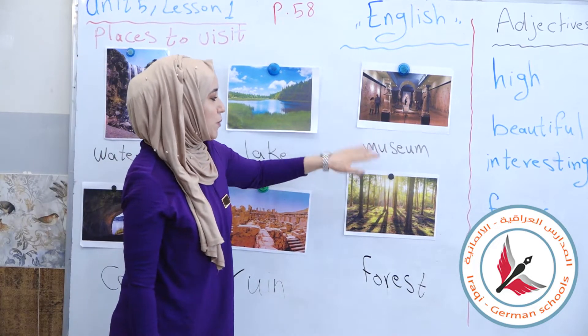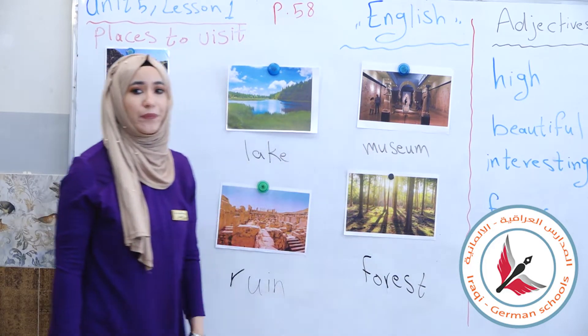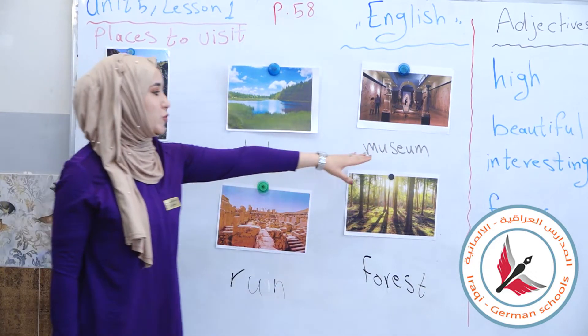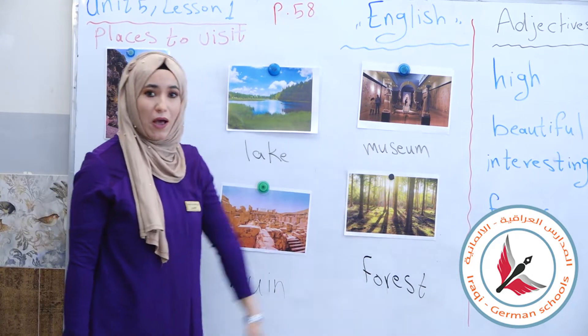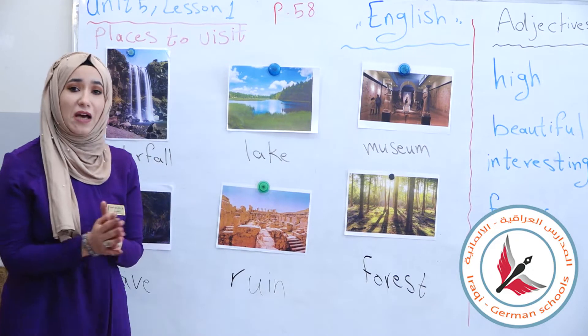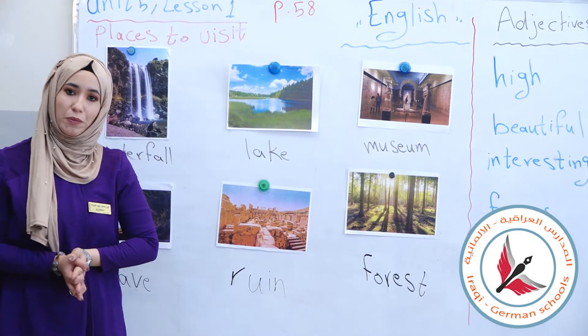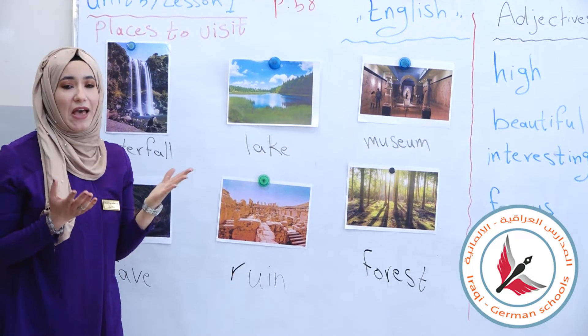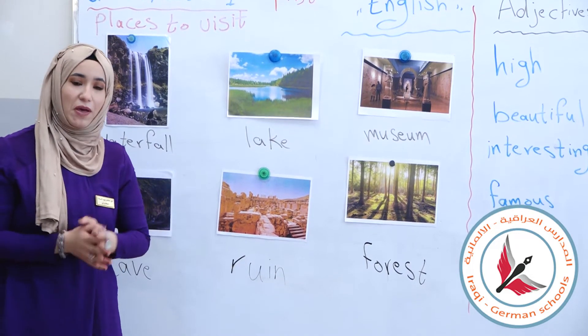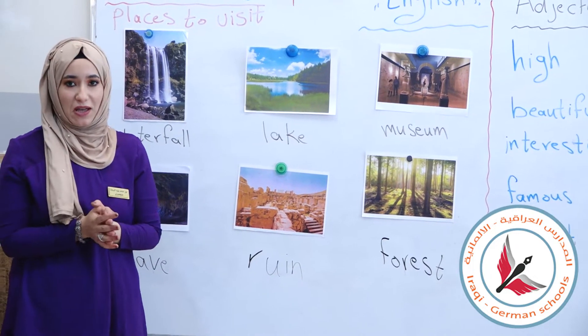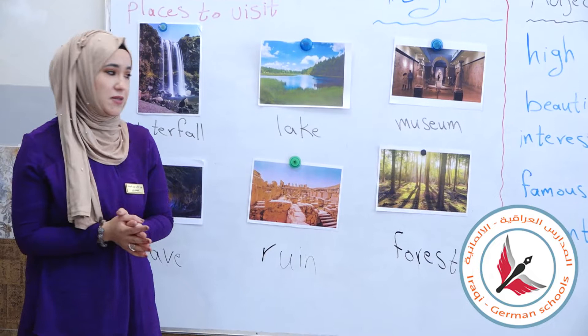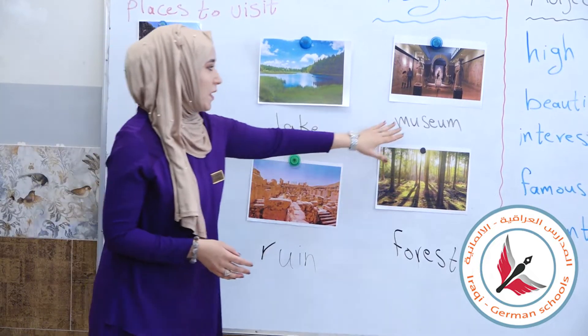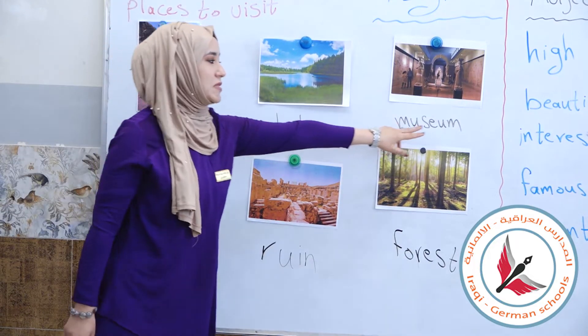Number three. Museum. What does a museum have? Old things, rare things — strange things. Here is the museum.